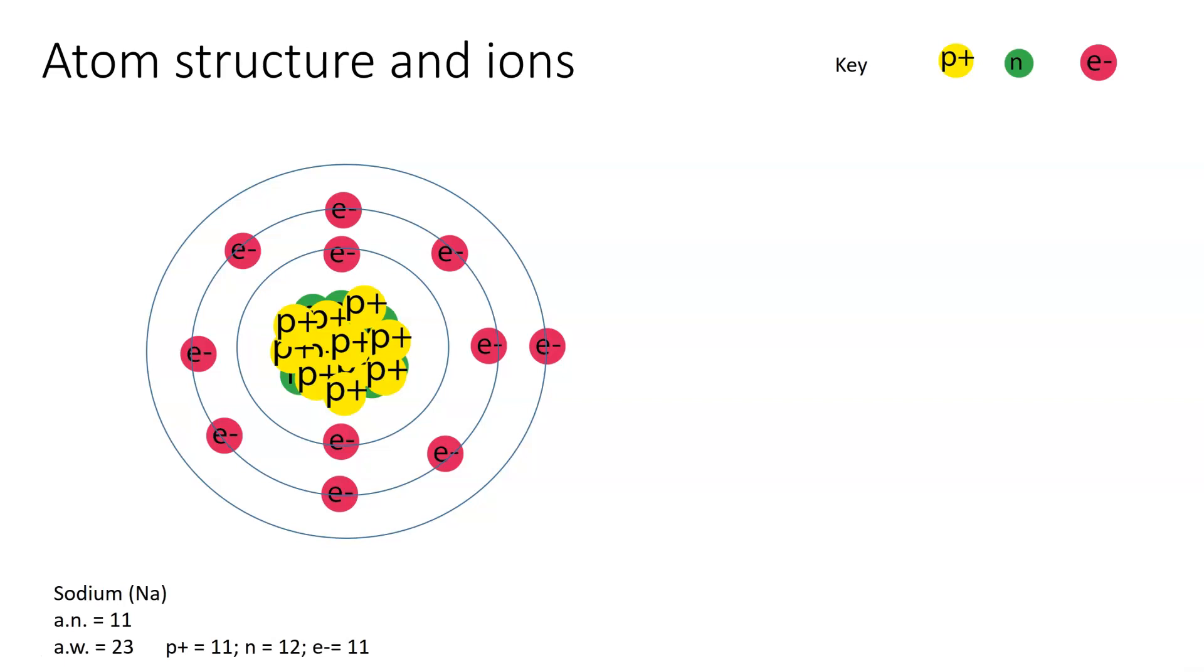It has an atomic number of 11. The atomic weight is 23. Therefore it has got 11 protons, 12 neutrons, and 11 electrons. The electrons are scattered around the outside in what we call orbitals.